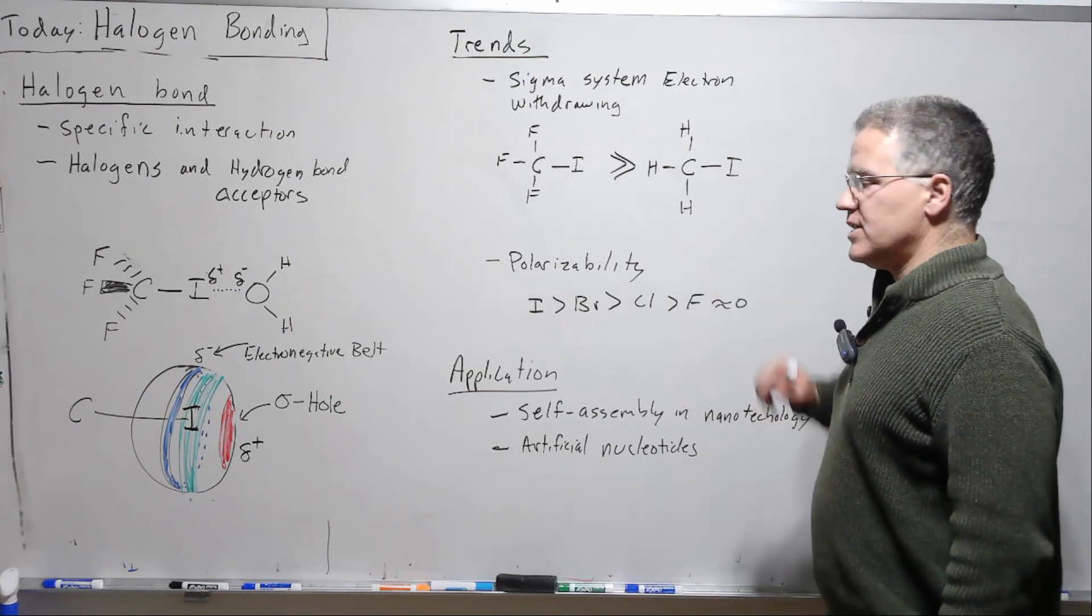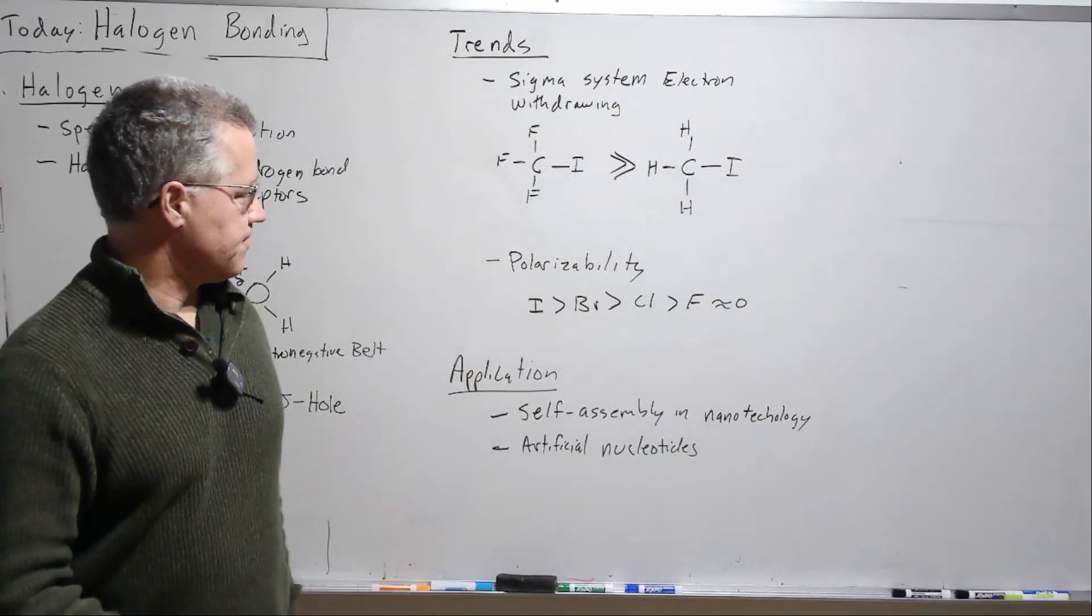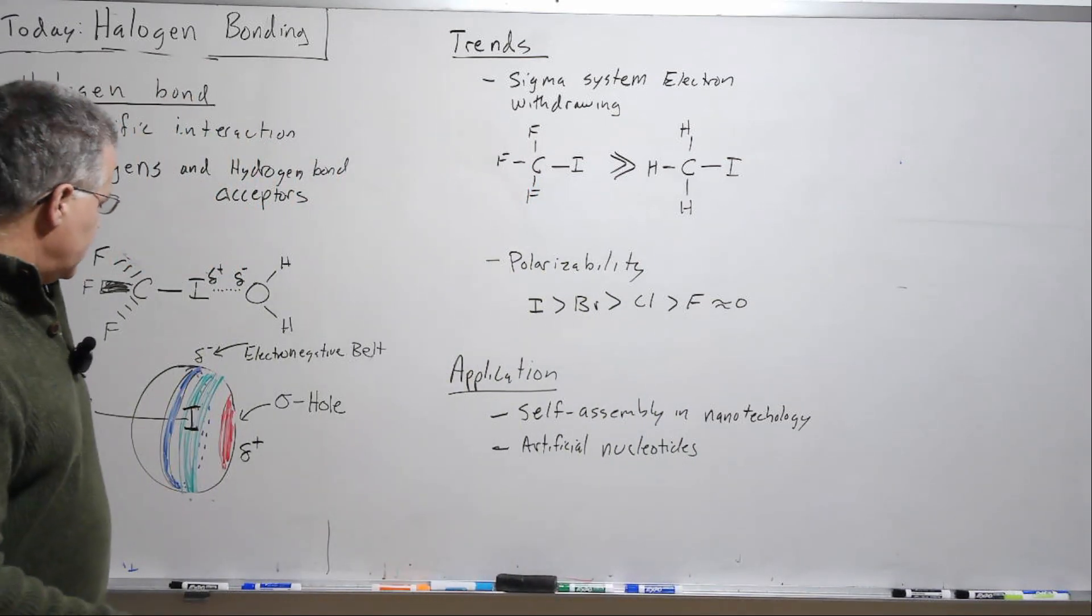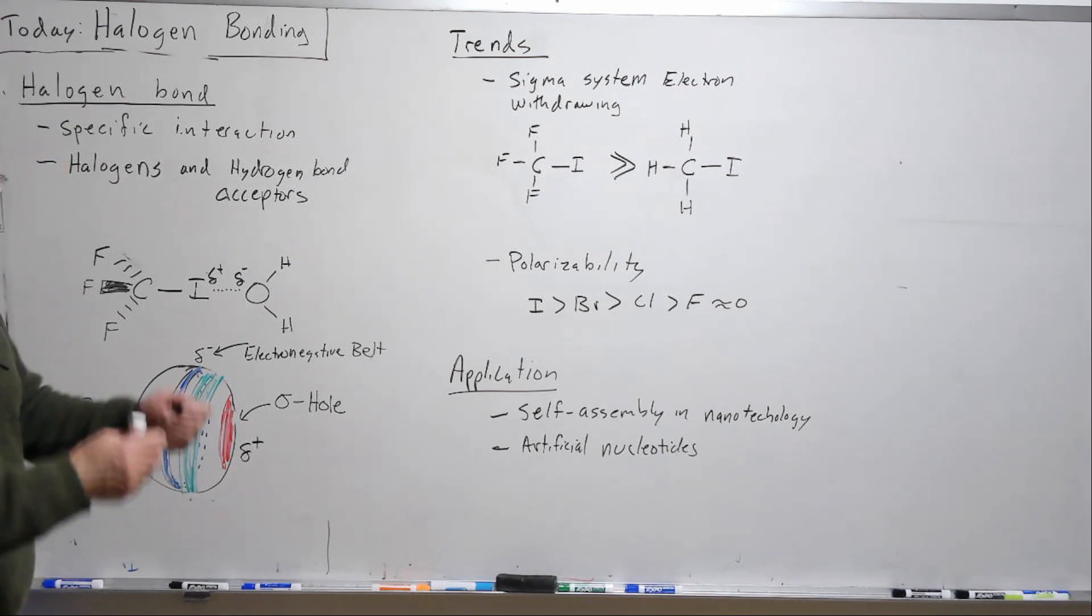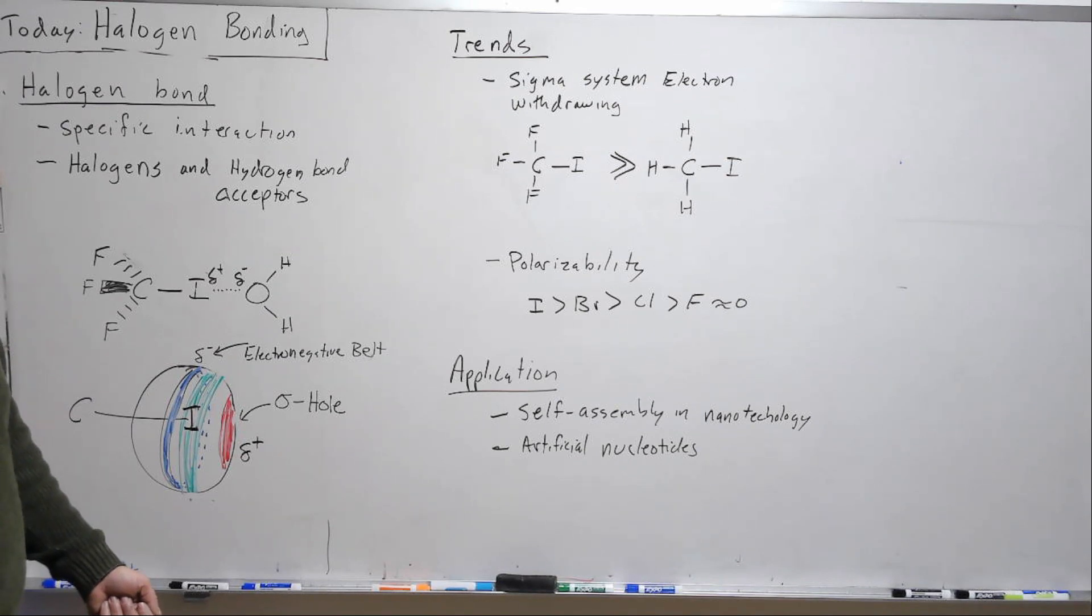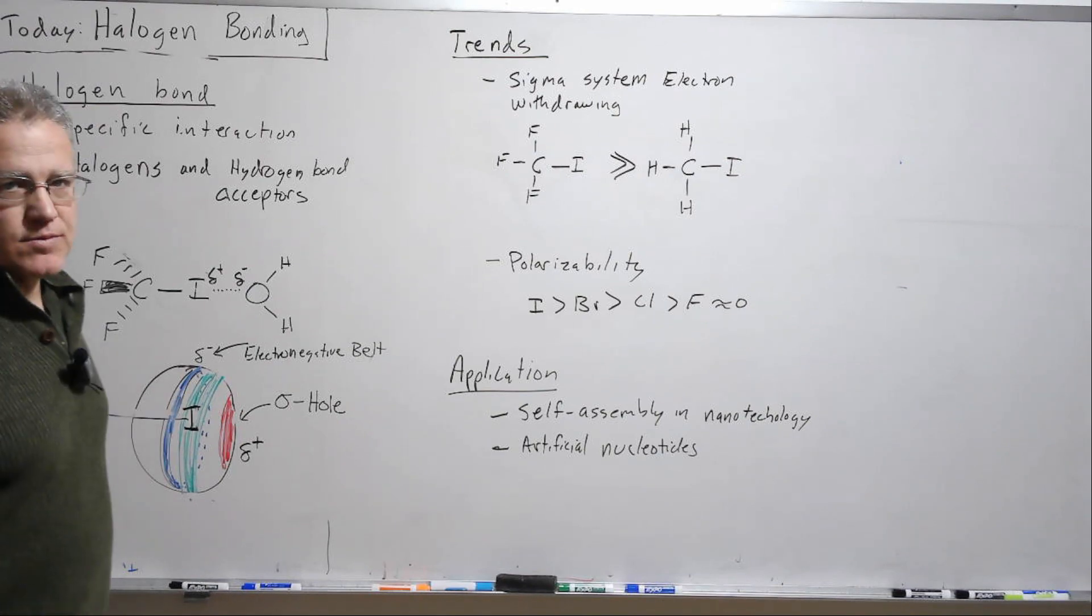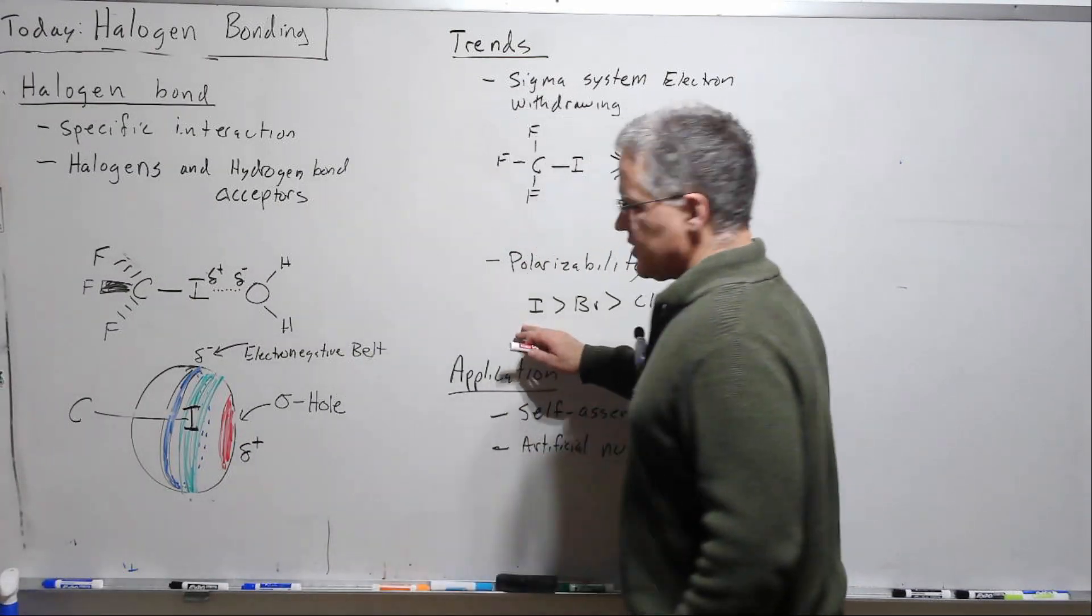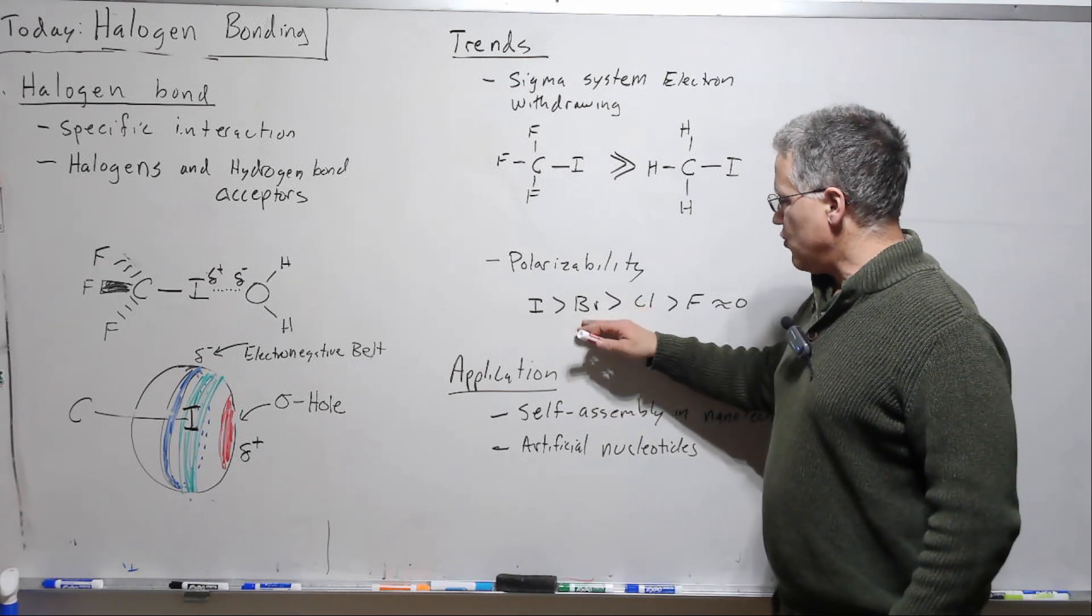Now the other thing is polarizability. So as we go down the table in the halogens, two things happen. One, we get a bit of a longer bond here, we become less electronegative and more polarizable. So the upshot of that is again this mechanism that withdraws through the sigma system and exposes that distal side will be more pronounced in iodine than bromine and chlorine.